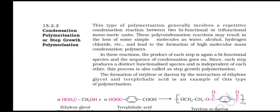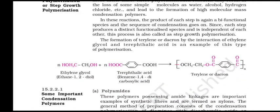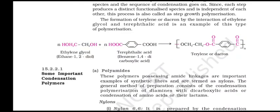Condensation polymerization or step growth polymerization: this type of polymerization generally involves a repetitive condensation reaction between two bi-functional or tri-functional monomeric units. These polycondensation reactions may result in the loss of simple molecules such as water, alcohol, or hydrogen chloride, and lead to formation of high molecular mass condensation polymers. In these reactions, the product of each step is a bi-functional species and the sequence of condensation continues. Since each step produces a distinct functionalized species and is independent of each other, this process is also called step growth polymerization. The formation of Terylene or Dacron by the interaction of ethylene glycol with terephthalic acid is an example of this type of polymerization.